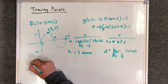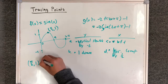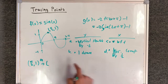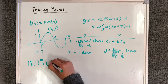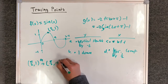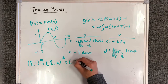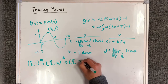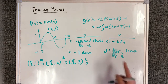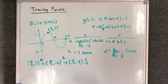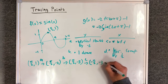Now I'll take my point and apply all four transformations. After transformation A — vertical stretch by a factor of negative 2 — take the y value and multiply by negative 2, giving pi over 2 comma negative 2. Apply transformation B, move it 1 unit down: pi over 2 comma negative 3. Apply transformation C — pi units to the left — take the x-coordinate and subtract pi: pi over 2 minus pi is negative pi over 2, giving negative pi over 2 comma negative 3.